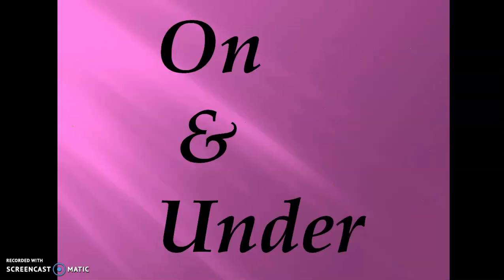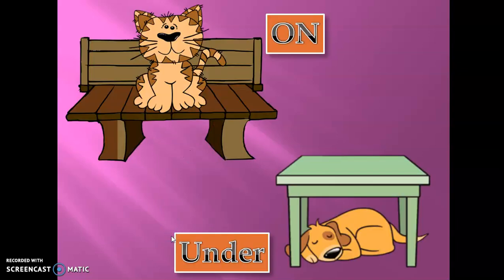On and Under. What can you say about this picture? Yes! In the given picture, the cat is on the table, whereas in the picture given below, the dog is lying under the table.